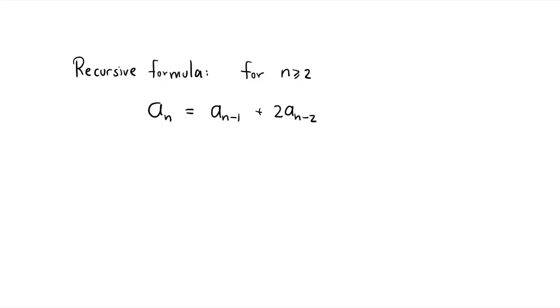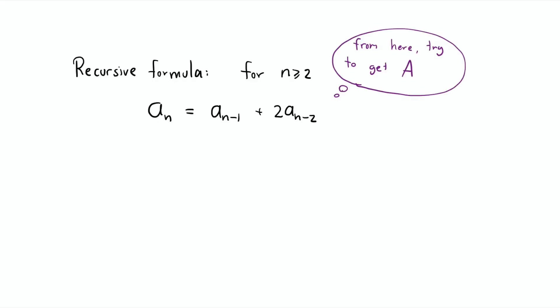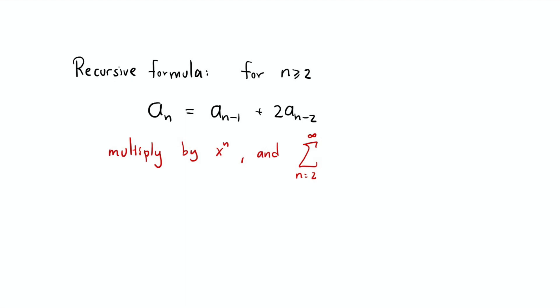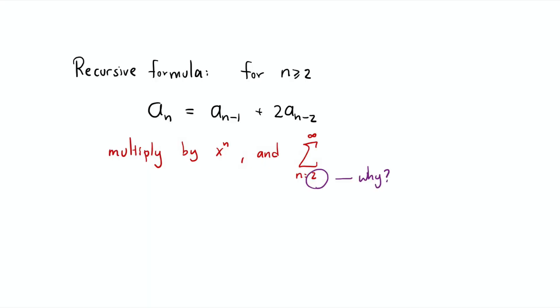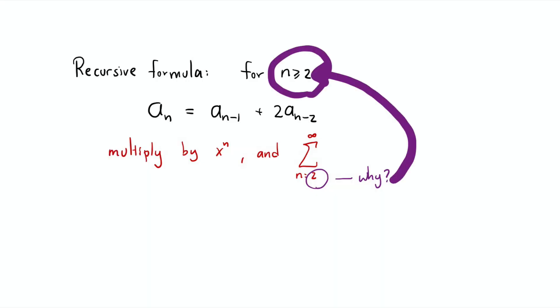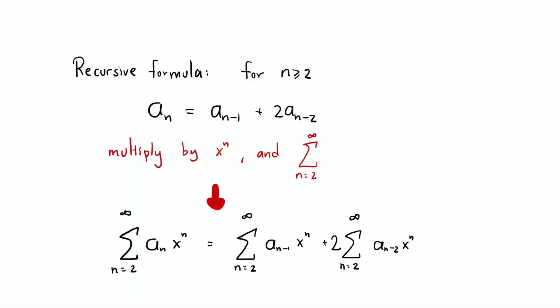So let's look at the recursive formula. We have aₙ equal to aₙ₋₁ plus twice of aₙ₋₂ whenever n is at least 2. What we do is we multiply the whole equation by xⁿ and then sum up from 2 to infinity. Why 2? Why don't we sum from 0 to infinity to match the form of big A? Well, we have to start from n equal to 2 because that recursive formula only works for n at least 2. For n equal to 0 and 1, you just look at the initial conditions: a₀ equal to 0, a₁ equal to 3. So we go back — we multiply by xⁿ and sum from n equal to 2 to infinity. We want to make every term become big A of some sort.